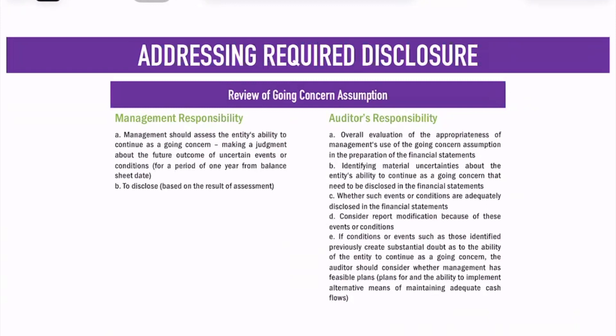The management responsibility is that management should assess the entity's ability to continue as a going concern, making a judgment about the future outcome of uncertain events or conditions for a period of one year from the balance date. You already know the basic accounting concept of going concern — that the entity is viewed as continuing in business. For audit purposes, the period to determine whether the business will continue is a 12-month period. Management will first look at whether they are a going concern or not, and based on the result of that assessment, they disclose.